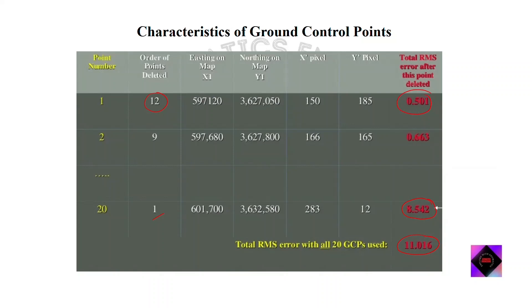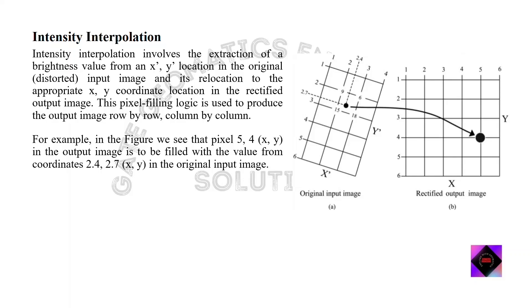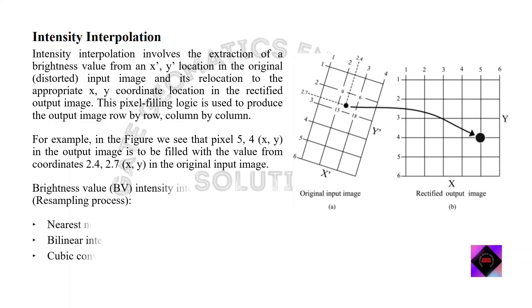Intensity interpolation involves the extraction of brightness values from the original input image and filling them into the rectified output image, row by row and column by column. For example, a point at 2.4, 2.7 in the input image is filled into the rectified output image at position 5, 4. There are three types of intensity interpolation, also called resampling: nearest neighbor, bilinear interpolation, and cubic convolution.